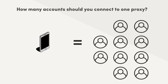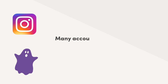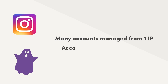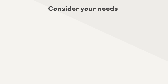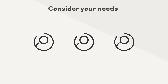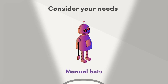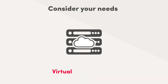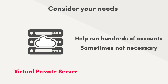Technically, you could use a proxy for more than one account, but it's risky. Several of your accounts could get shadow banned at once if they are connected to the same proxy and make suspiciously similar actions. Second, consider your needs. If you only want to run two or three Instagram accounts with your bot, then maybe you don't need proxies at all. There are some Instagram bots called manual bots because they don't require proxies. The same goes for virtual private servers — they can help you run hundreds of accounts, but you don't always need one.